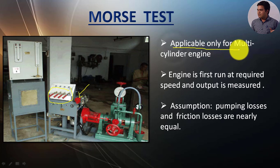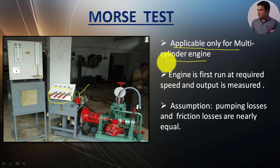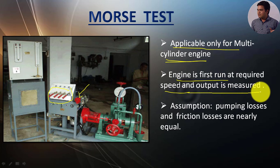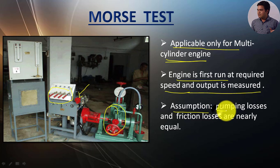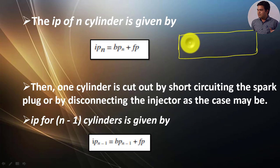The Morse test is applicable only for the multicylinder engine; it is not used to estimate friction power for a single-cylinder engine. In this test, the engine is first run at the required speed and output is measured with a dynamometer — in most cases nowadays an eddy current dynamometer is used. The whole experiment is run at constant speed under variable loading conditions. One assumption is that by considering pumping losses and friction losses as nearly equal, we can estimate the Morse test accurately.